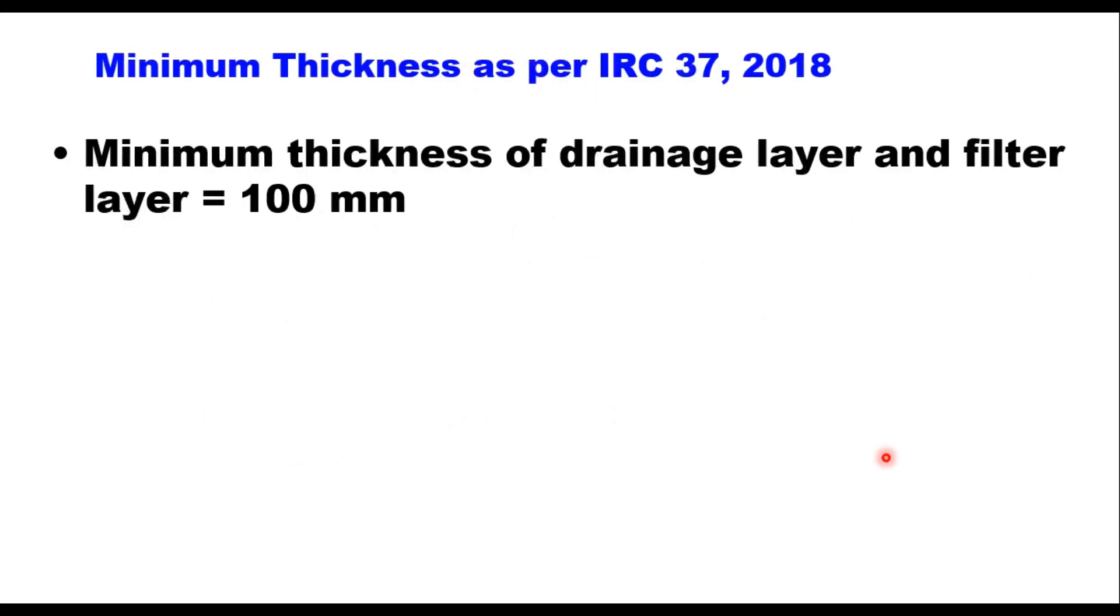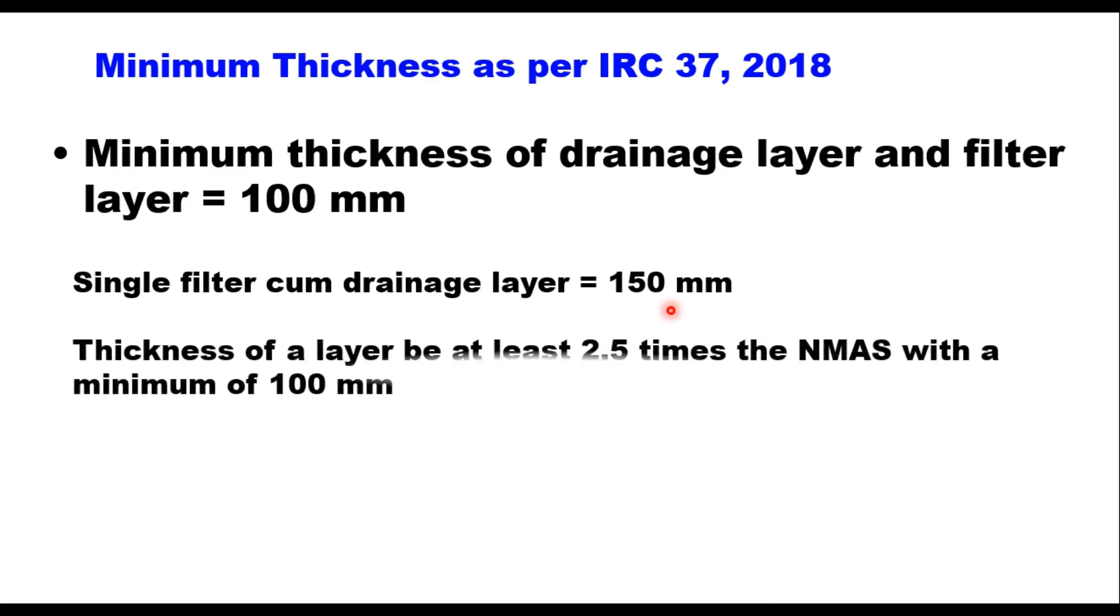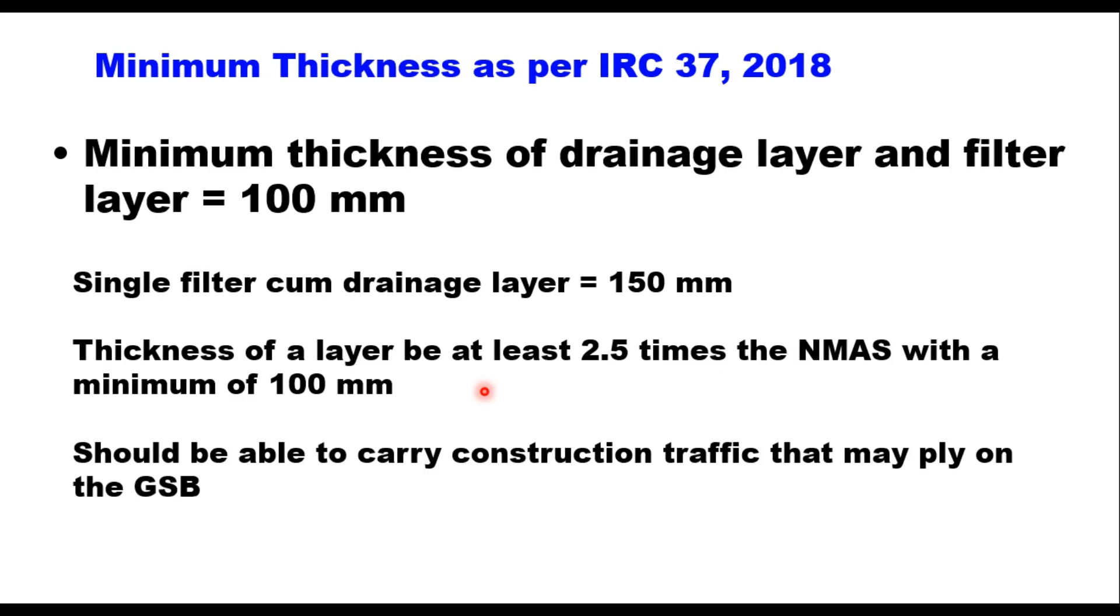IRC 37 2018 suggests that the minimum thickness of drainage layer and filter layer individually should be 100 millimeter. When subbase is provided in a single layer, then it will act as a filter cum drainage layer and its thickness should be at least 150 millimeter. Thickness of a layer should be at least 2.5 times the nominal maximum aggregate size with a minimum of 100 millimeter.